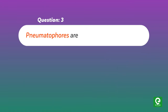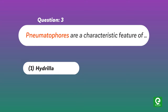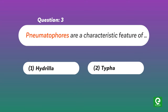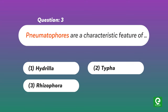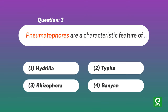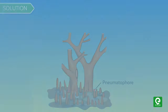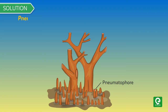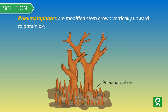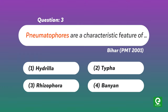Question: Pneumatophores are a characteristic feature of — (1) Hydrilla, (2) Typha, (3) Rhizophora, (4) Banyan. This was asked in Bihar PMT 2001. Solution: Pneumatophores are modified stems that grow vertically upward to obtain oxygen in swampy areas. Hence option 3 is the right answer.